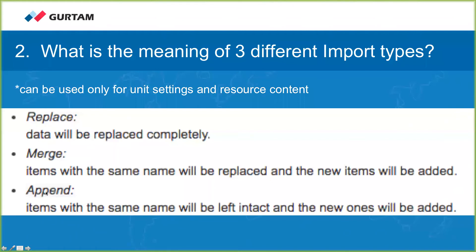The third option, 'append,' means items with the same name will be left intact and only new ones will be added. I find this option less popular because if you already have a mileage sensor and you copy a mileage sensor from one unit to all others, those units will end up with two mileage sensors. This situation is unlikely but there are certain cases when you may want to have two sensors with the same name in unit properties.